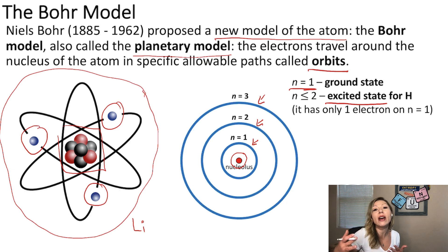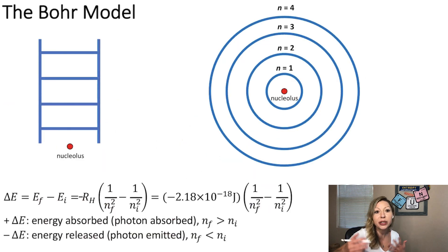A really cool way of imagining this model is just simply using a ladder. So just like when you are climbing up on a ladder, electrons can live on these orbits, but they cannot be between those lines.